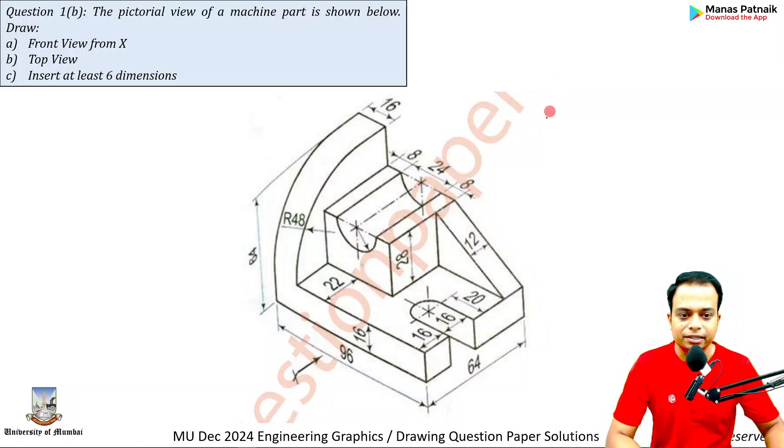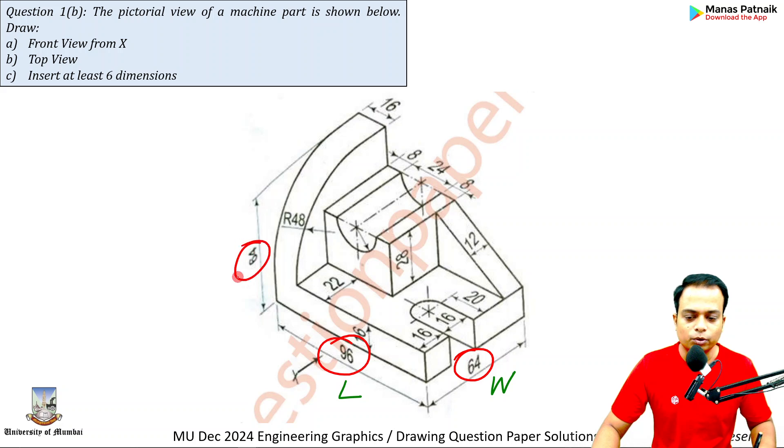First thing you should realize is that the length of the object is 96. This is the width. And this dimension over here is the height. So we have the length, width, and height as 96, 64, and 64.